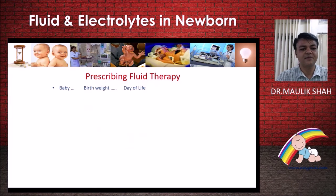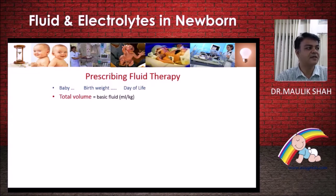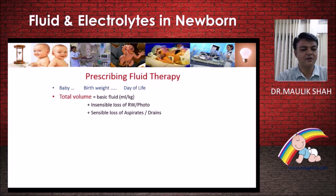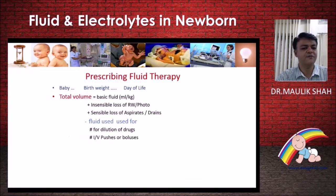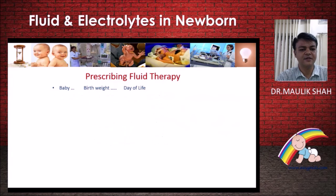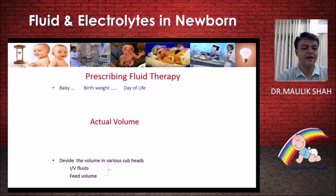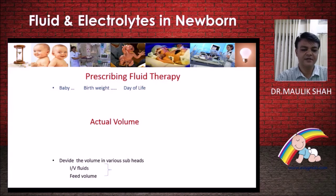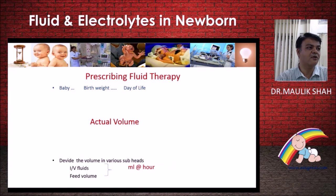Revising the principles: take birth weight and day of life into account. Total volume = basic fluid + insensible water loss + sensible water loss, minus fluid used for drug dilutions, IV pushes, and blood products. This gives the actual volume, which is then divided between IV fluids and oral feeds, expressed as ml per hour.